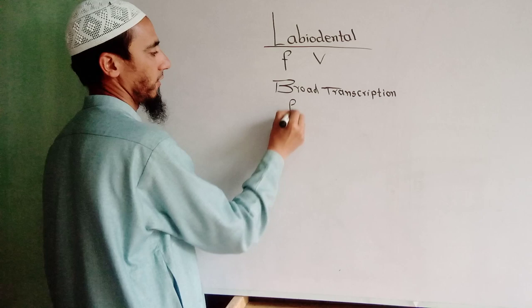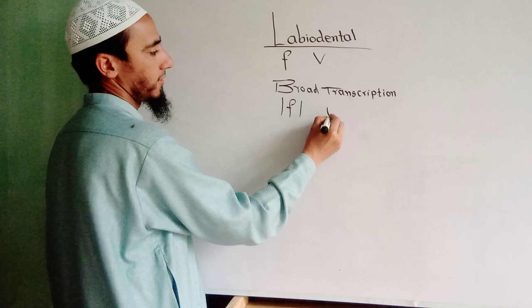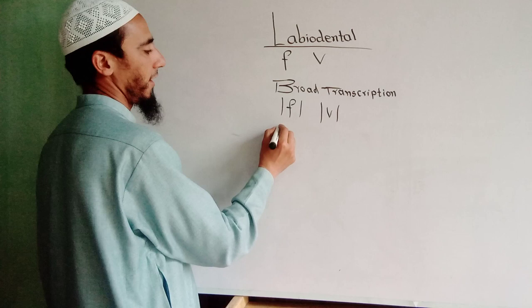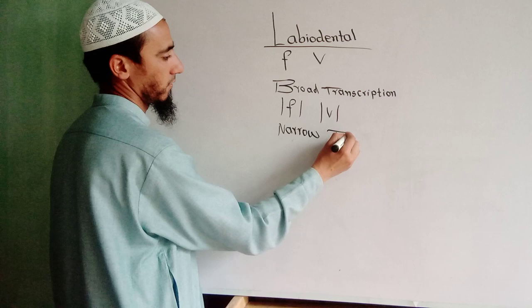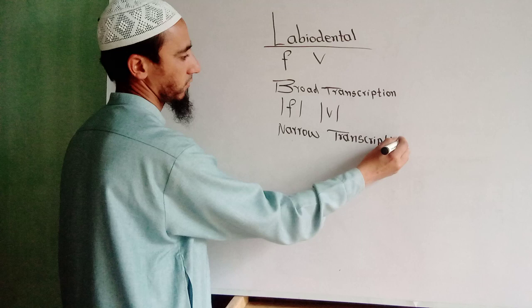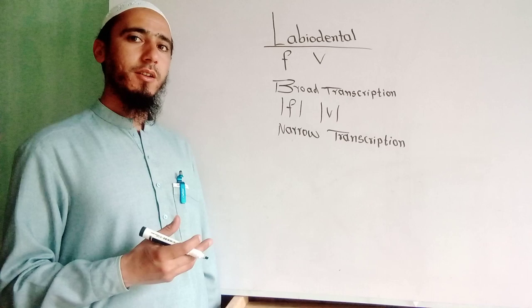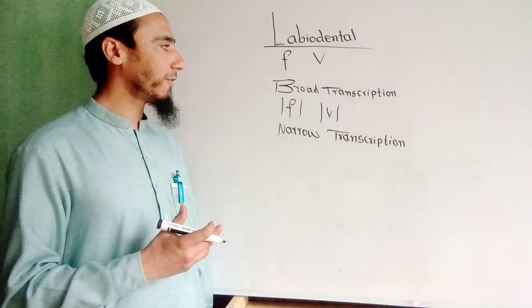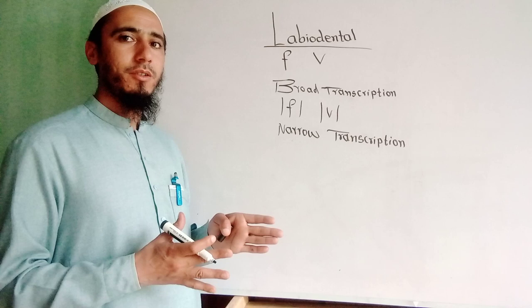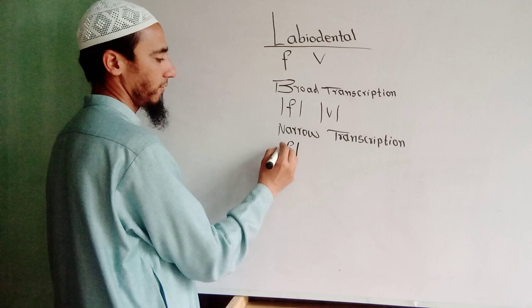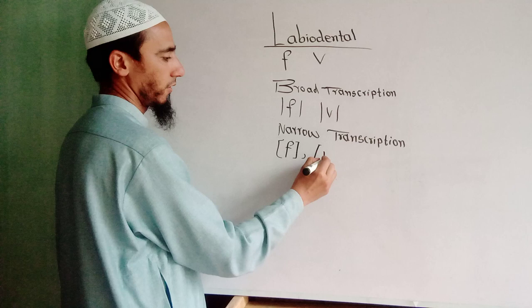For example, the F sound and the V sound are written between slashes in Broad Transcription. Another method is Narrow Transcription, which is a method of writing down the sounds of a language as symbols between square brackets. So these are the two methods — Broad Transcription using slashes, and Narrow Transcription using square brackets — applied to the F and V sounds.